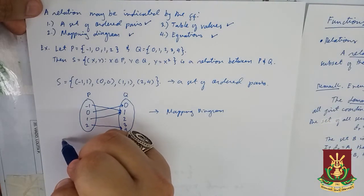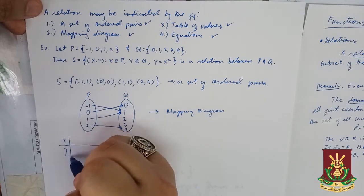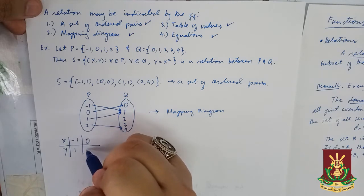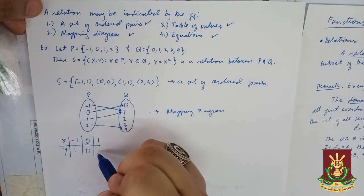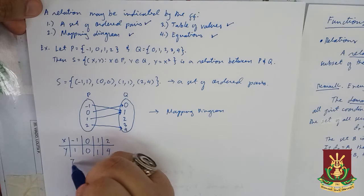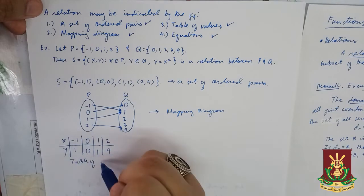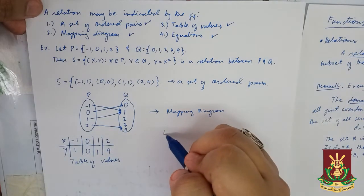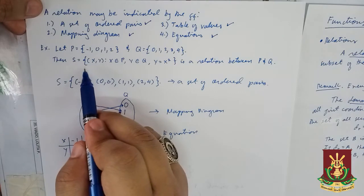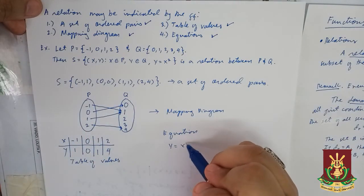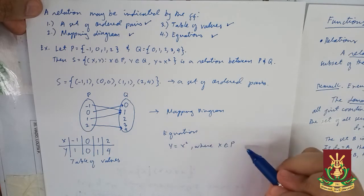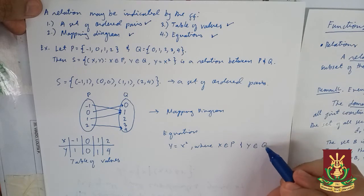We may also consider the following table of values: when X is -1, Y = 1; when X is 0, Y = 0; when X is 1, Y = 1; and when X is 2, Y = 4. This is a table of values. Finally, we have the equation which describes the elements of our set S, given by Y = X², where X is taken from P and Y is taken from Q.